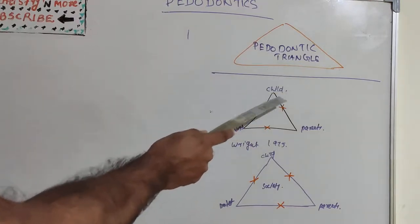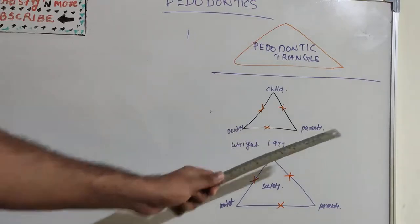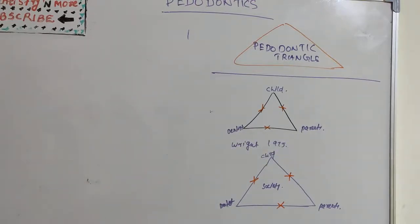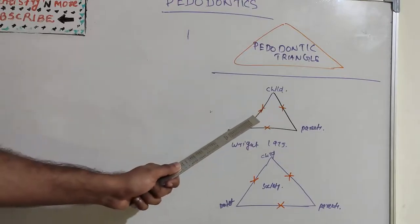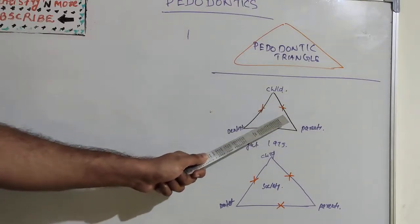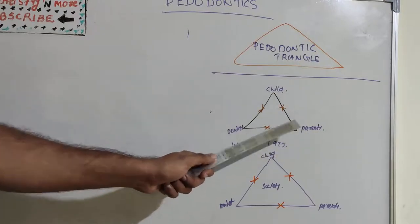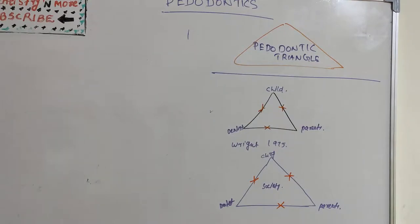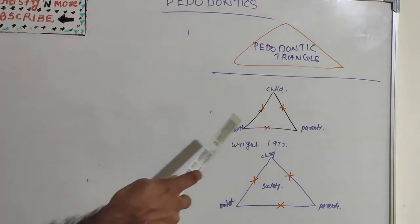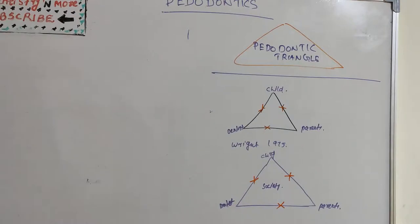In the pedodontic triangle, the child is at the apex, and the dentist and the parents are at the other two ends. There is always a mutual interaction — between dentist and child, dentist and parent, and child and parent. The child should be given utmost importance by both the dentist and parents.